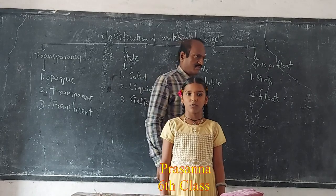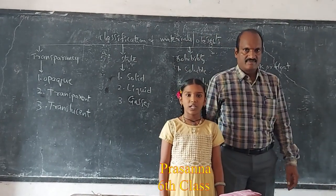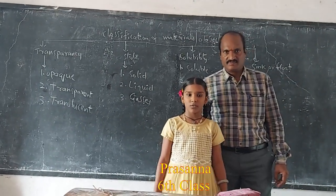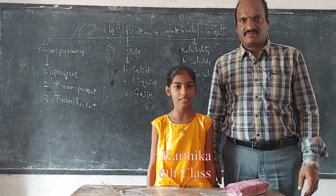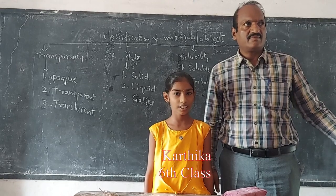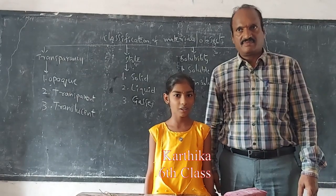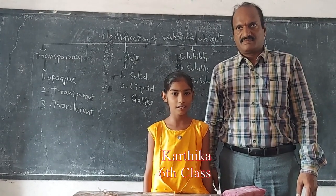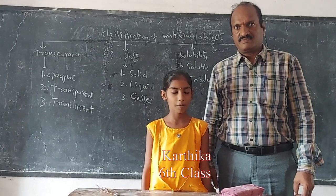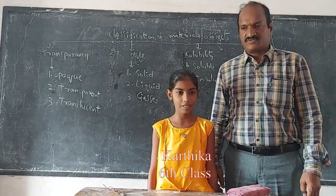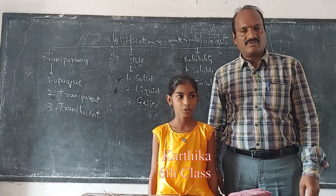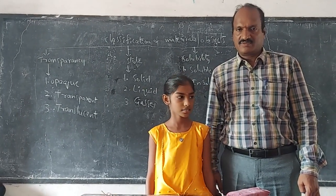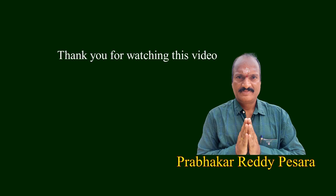Some objects float on water or liquids. Example: wood floats on water. Conclusion: on the basis of their properties, materials or objects are classified in various ways. Thank you.